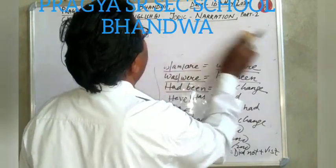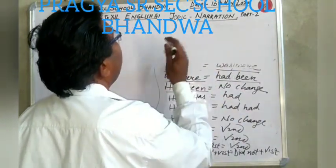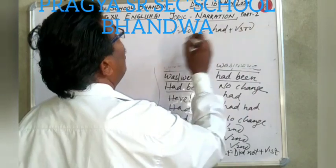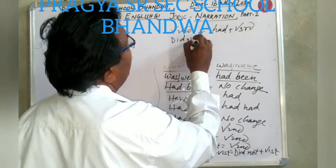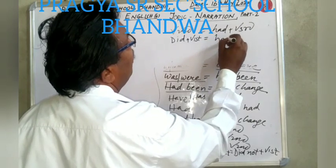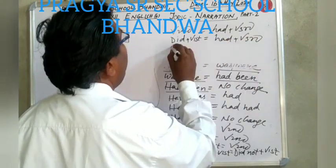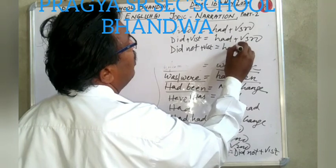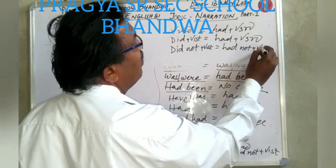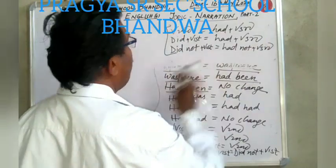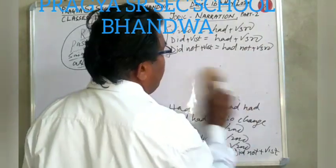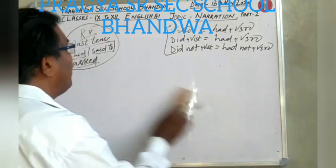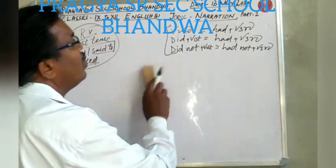Next, past indefinite changes into past perfect. Past indefinite means second form of verb will be changed into had plus third form of verb. Did plus first form of verb will also be changed into had plus third form of verb. Did not plus first form of verb will be changed into had not plus third form of verb. Past continuous will be changed into past perfect continuous tense. And past perfect — no change. Past perfect continuous tense also — no change.